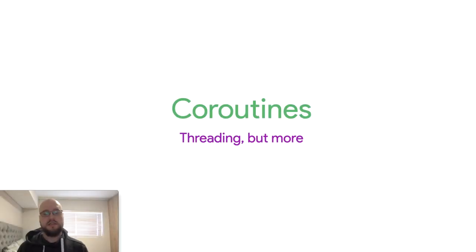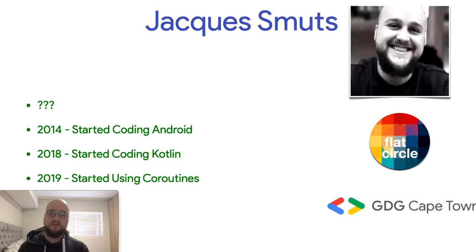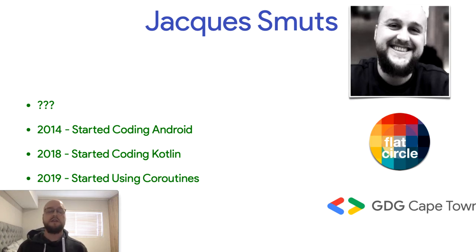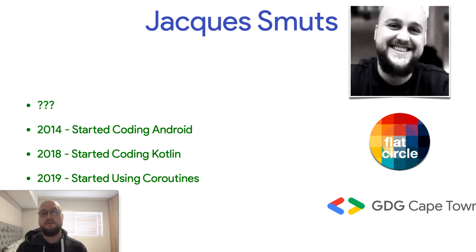This is a talk on coroutines, which involves threading and lots of other things. A quick background: I'm Jock Smuts, I started with Android in 2014, Kotlin in 2018, when I joined The Flat Circle, a development agency in Cape Town that makes Android and iOS apps. In 2019 we started using coroutines fairly aggressively. We played around with the experimental version in 2018, but when coroutines came into stable we started using them whenever we could. A lot of what you're about to see comes from my own personal experiences with using coroutines. I'm also a member of GDG Cape Town, where I gave this talk.